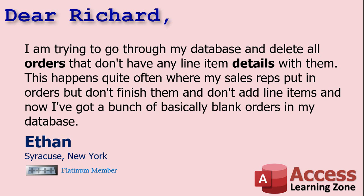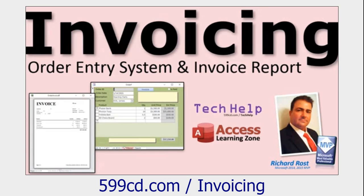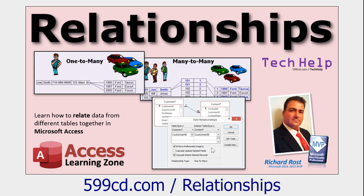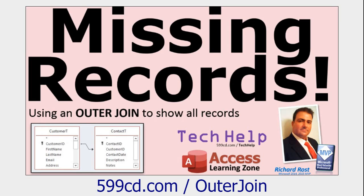I changed some of the details in this video so that it had more mass appeal. I wanted to use an example that everyone can understand. Ethan sent me this question about two tables specific to his business, so I adapted it to orders and line items — two related tables. If you want to learn more about how I built my invoicing database with the order tables, go watch that video. You should also have a good understanding of relationships and know what an outer join is — where you're missing records on one side of a join.